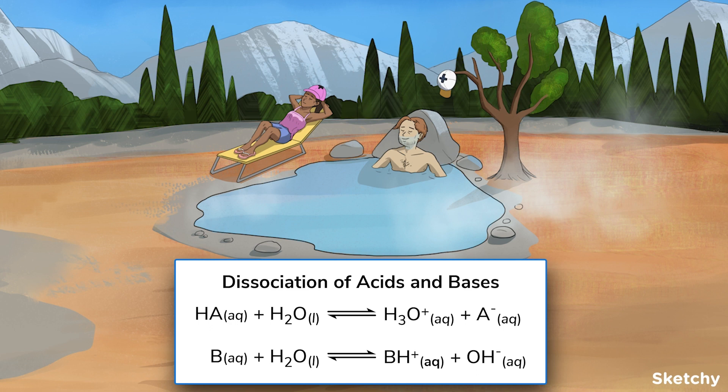Acids always dissociate into an anion and a hydrogen cation. Bases always accept a proton from water, resulting in a cation and a hydroxide.